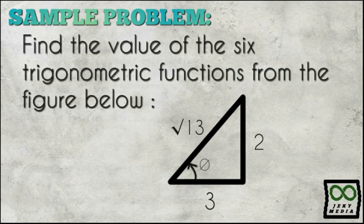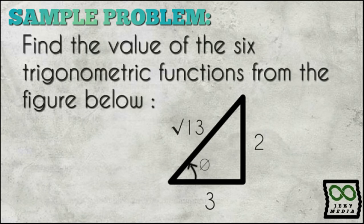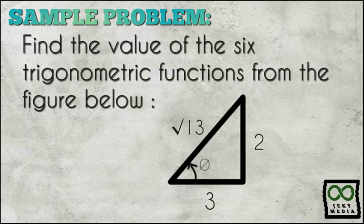Find the value of the six trigonometric functions from the figure below. The figure shown will give you the value of the sides: the opposite side is equal to 2 units, the adjacent side is equal to 3 units, and the hypotenuse is equal to the square root of 13.